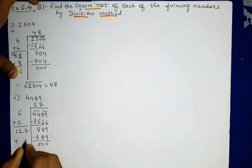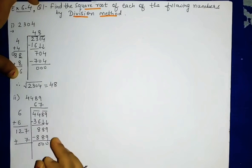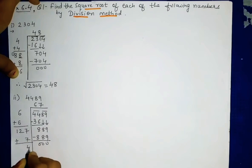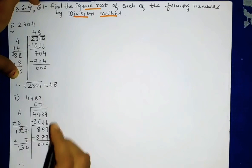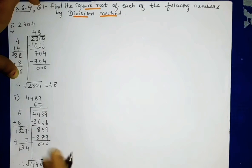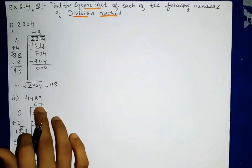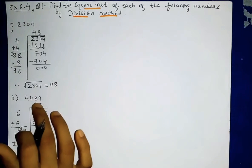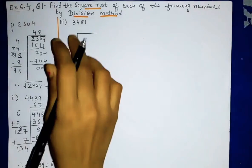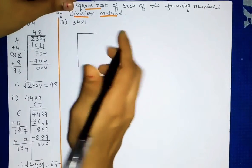You can also add up on the left side: 127 plus 7 gives 134. So √4489 = 67. If you multiply 67 two times you get 4489. This was the second part. Now we will see the third question: 3481.